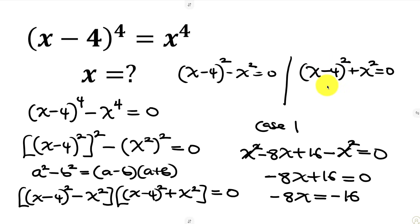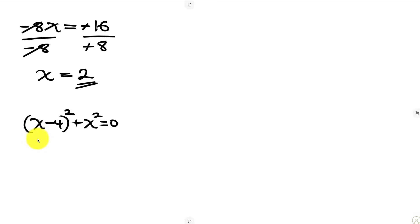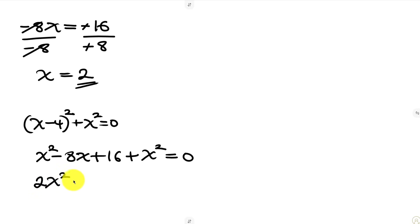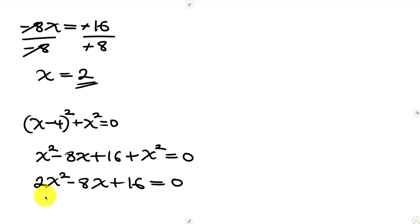Now let's go back to Case 2. We need to expand this bracket. On expanding, we get x squared minus 8x plus 16 plus x squared, and this is equal to 0. Simplifying further, x squared plus x squared gives 2x squared, minus 8x, plus 16, equals 0.